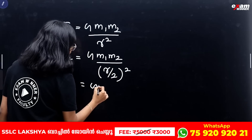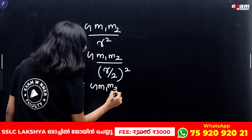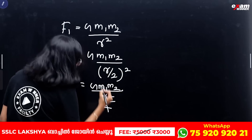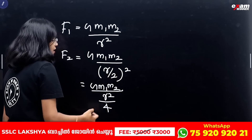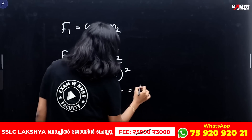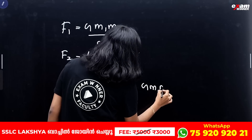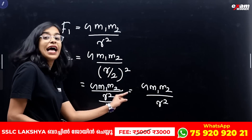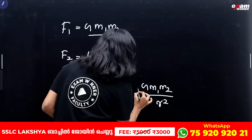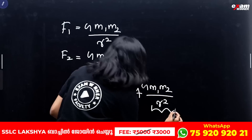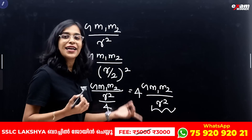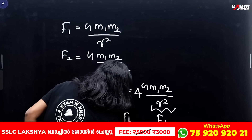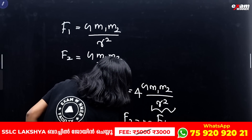This gives G M1 M2 divided by R squared by 4. That is G M1 M2 divided by R squared, multiplied by 4. This equals 4 times F1. So F2 = 4F1.